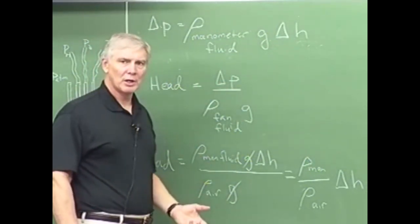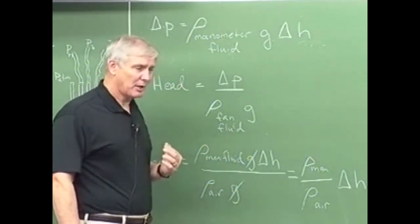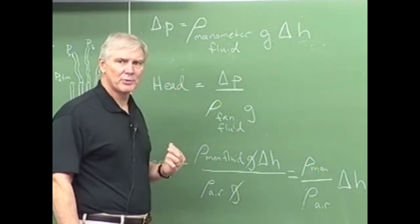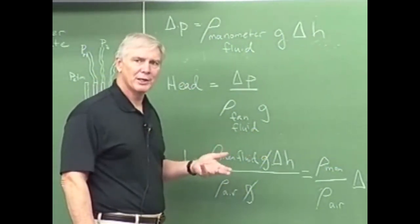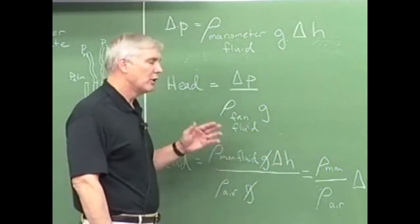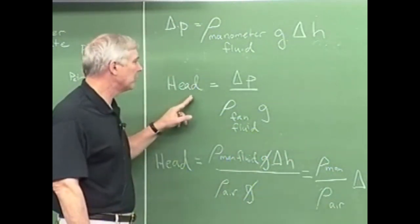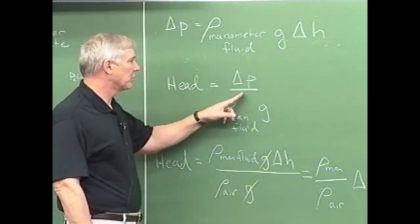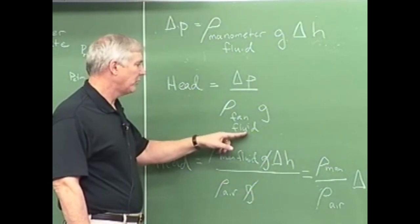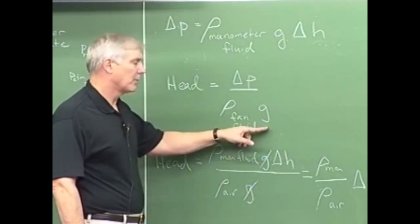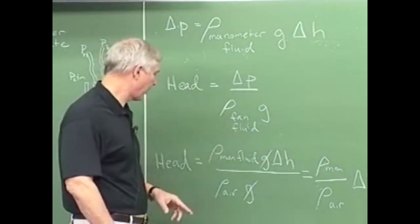But what we ultimately want to get is head. In your pipe loss lab, we measured head directly by measuring the difference in the height of the fluids. But here, because the fluid is air, we can't see it. We have to measure it some other way. So we're going to measure pressure and then convert that to head. So remember the head, which I've written out here, is just equal to delta P divided by the density of the fan fluid and gravity. This is not the manometer fluid. This is the, in our case, this is air.